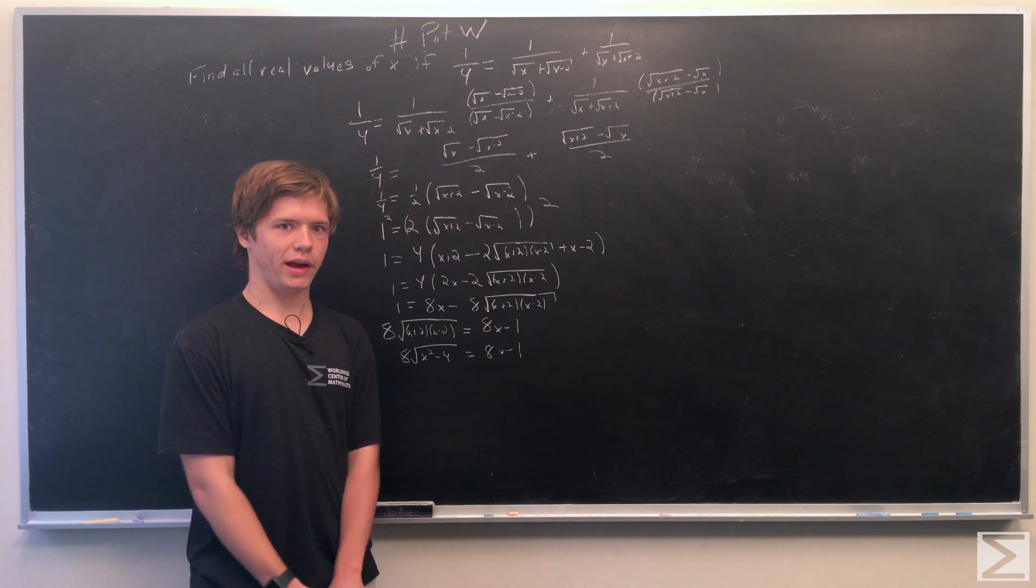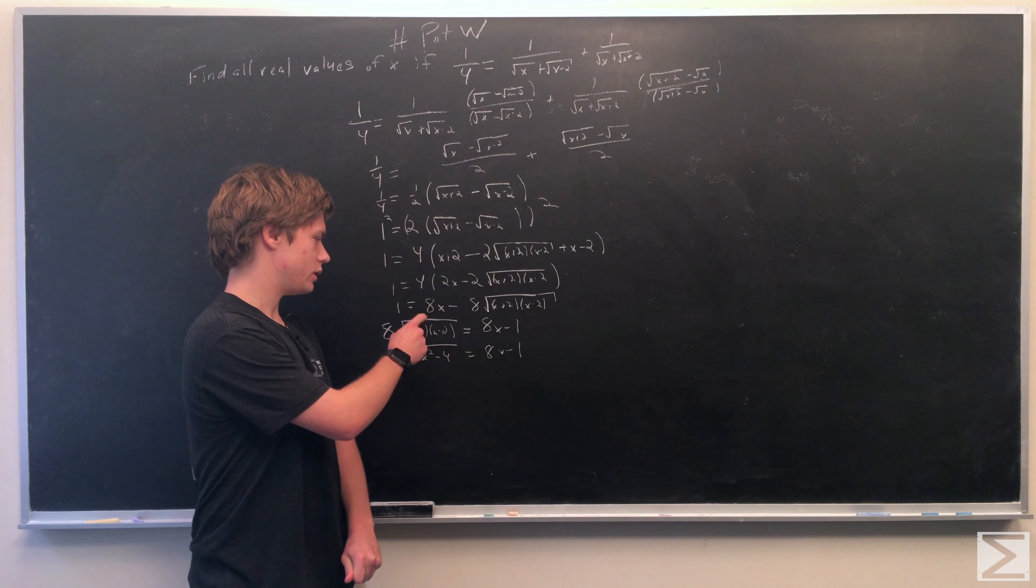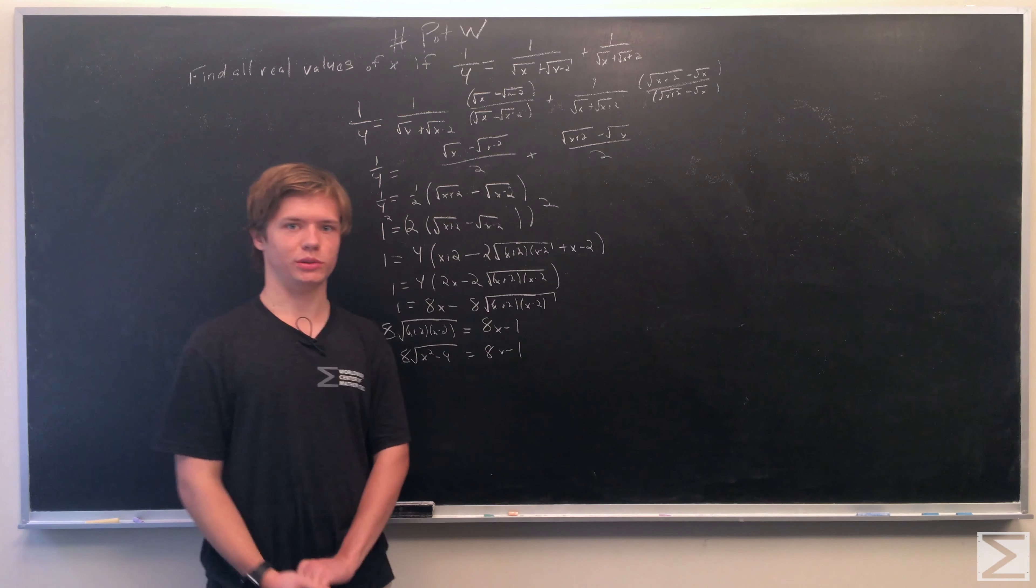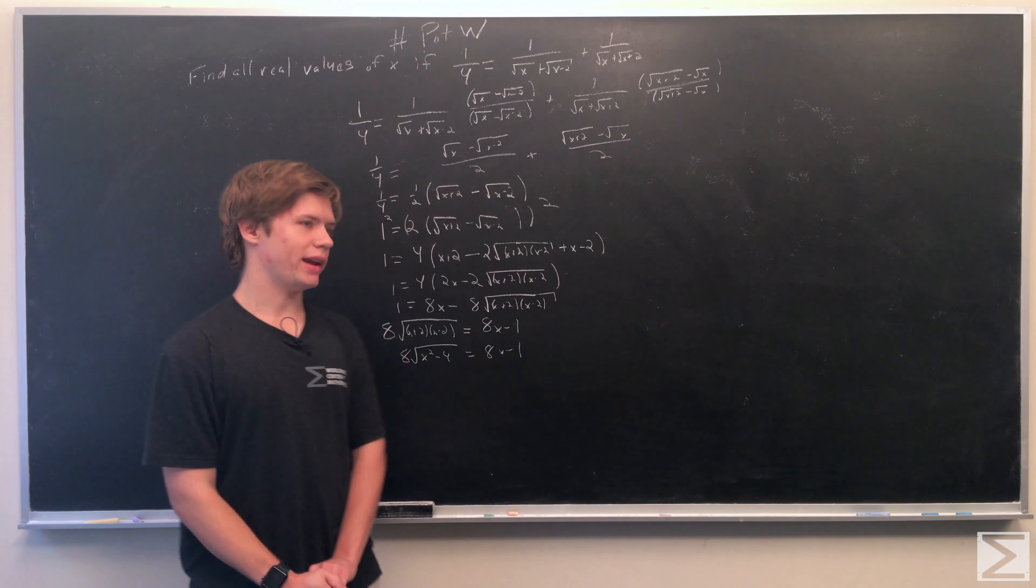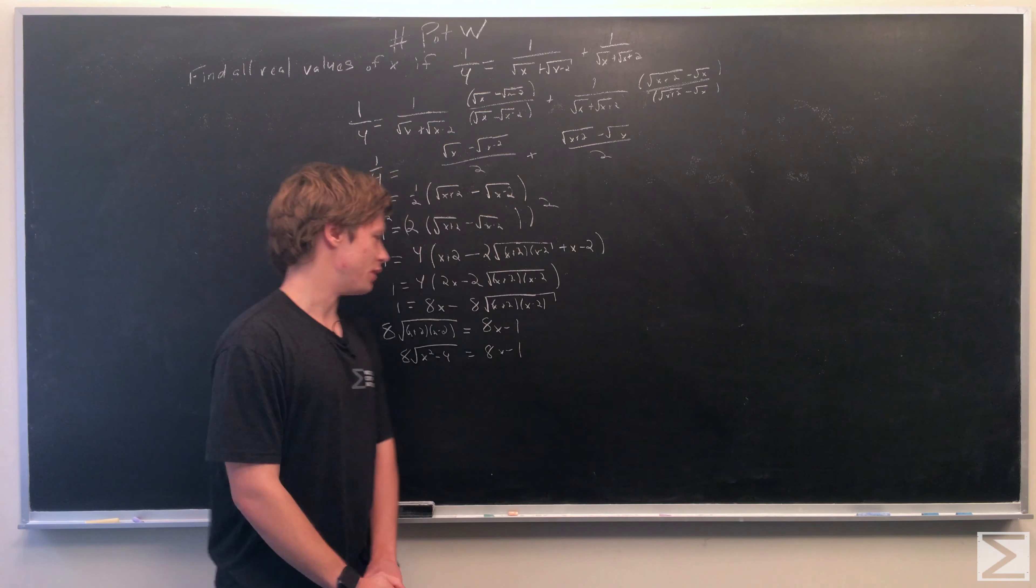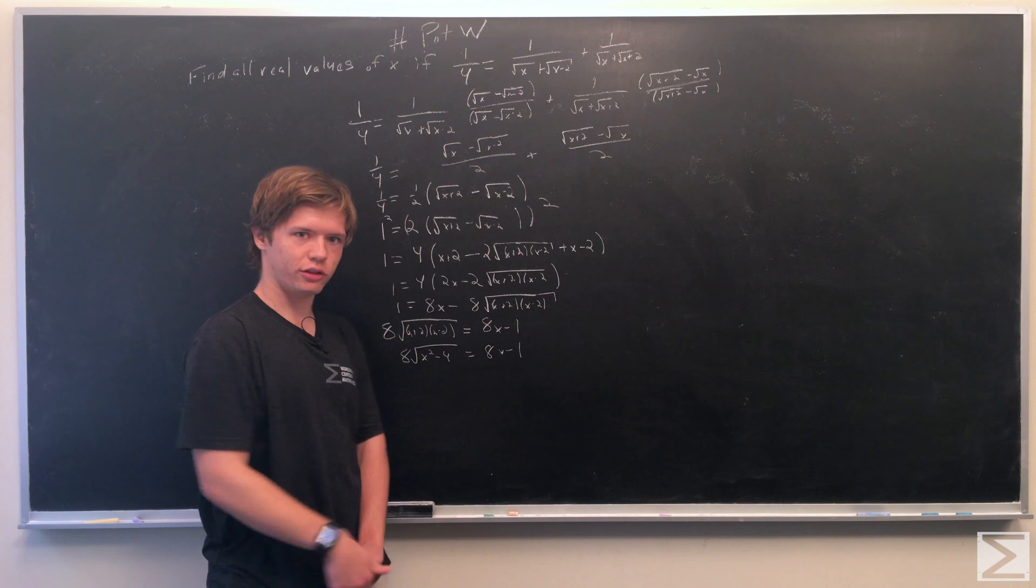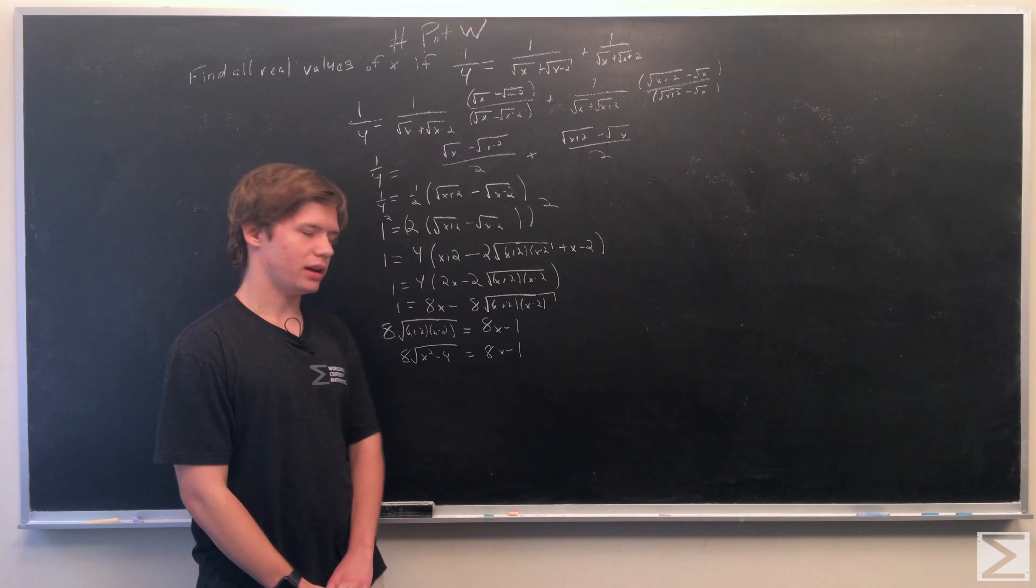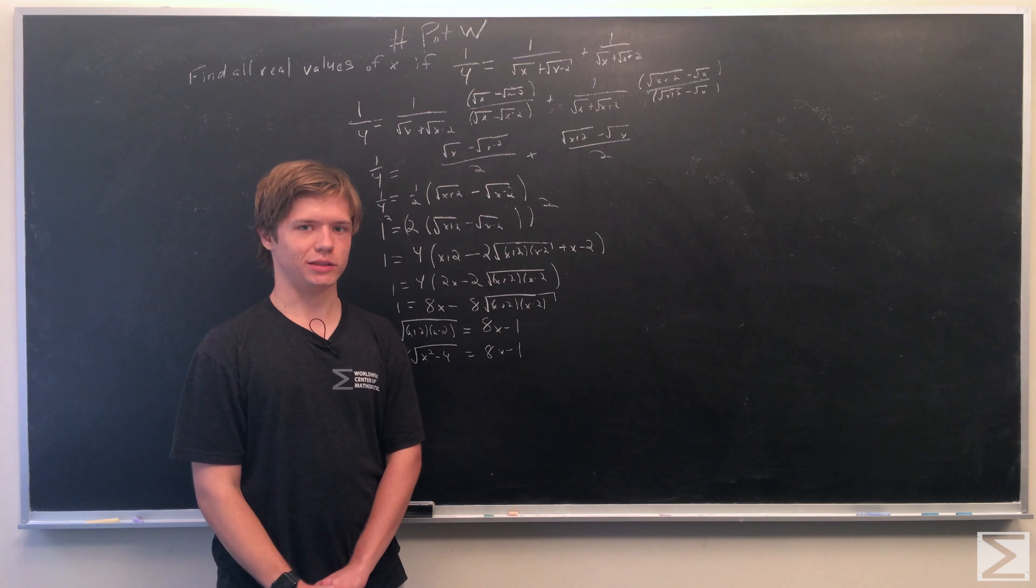Now we have 8√((x+2)(x-2)) = 8x - 1. We can simplify the term under the square root to get 8√(x² - 4) = 8x - 1.